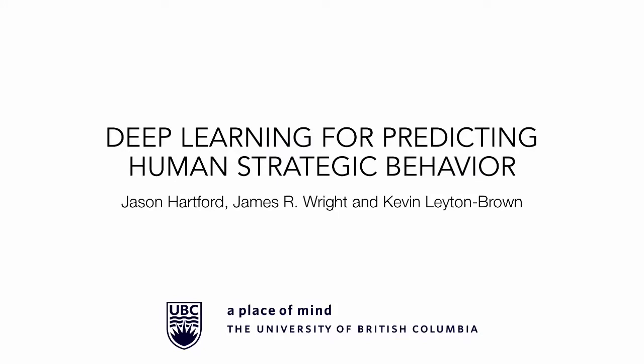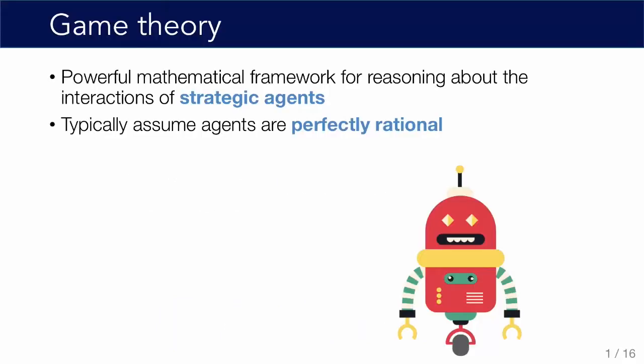This is joint work with my co-authors James Wright and Kevin Nathan Brown, and let's talk about game theory. So, many of you are probably familiar with game theory. My one-sentence summary is that it's a powerful mathematical framework for reasoning about the strategic interactions of agents.